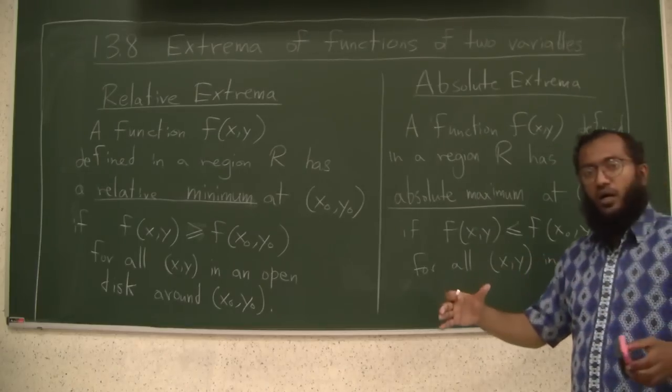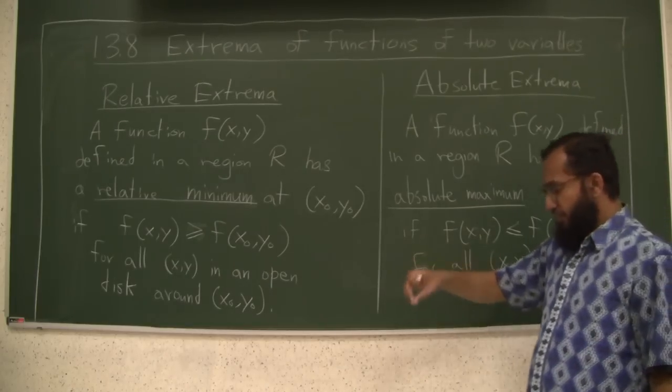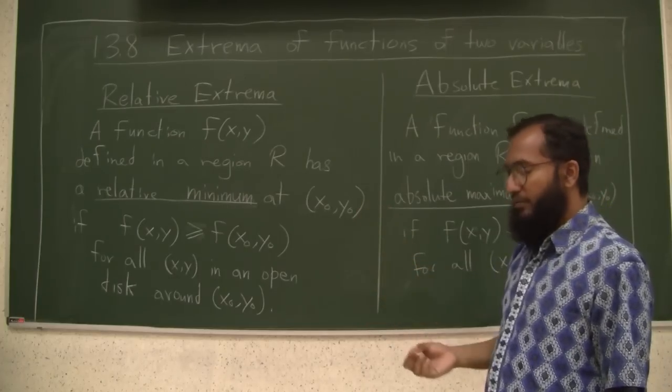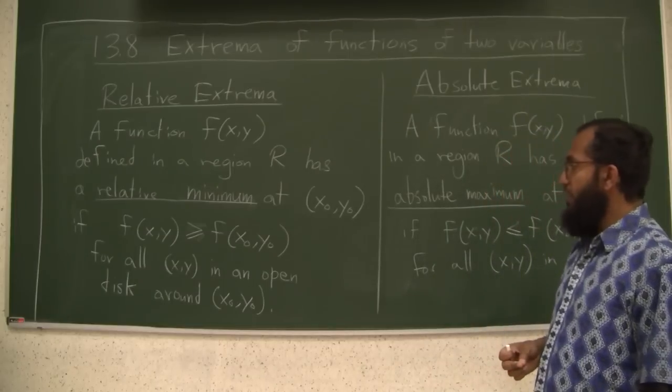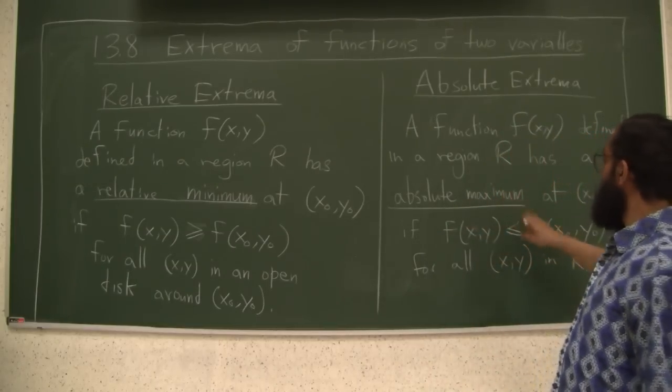If over whole R, a guy, a point has his function value bigger or equal to anybody else, we say he's an absolute maximum in the whole region.